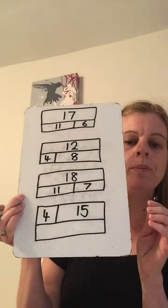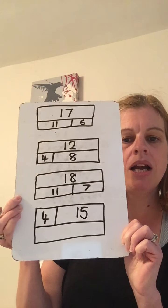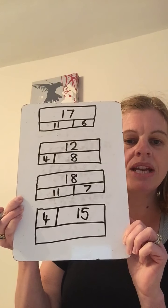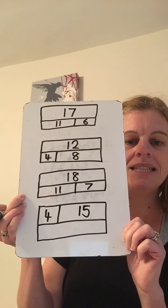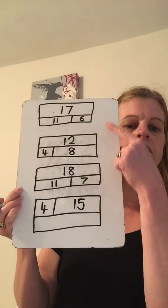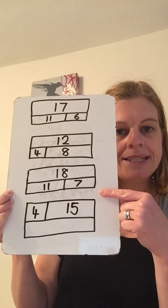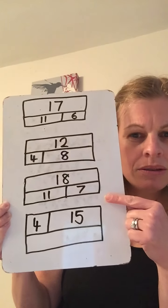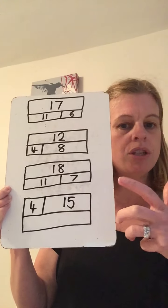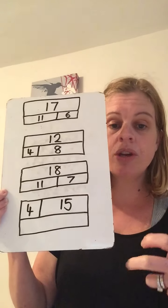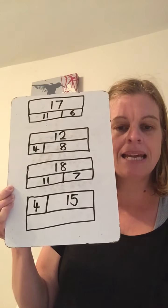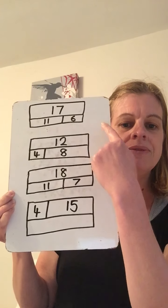Here are four bar models. I would like you to have a go at writing the fact families for these bar models. One, two and three are nice and simple. All the numbers are there for you — you don't have to work anything out. You could use your number line to check that I've got my numbers right, because you never know, I might have made a mistake. Write the fact families for these three.